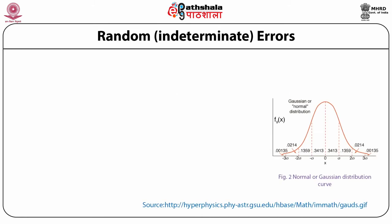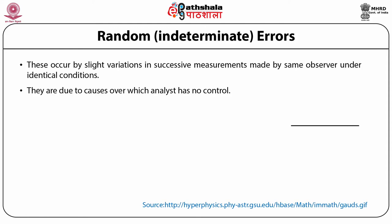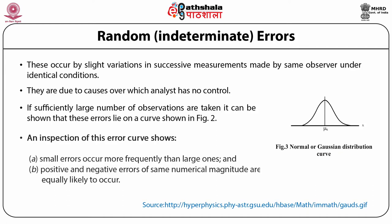Another type are random or indeterminate errors. These manifest themselves by slight variations in successive measurements made by the same observer with the greatest care under nearly identical conditions. They are due to causes over which the analyst has no control and are generally intangible. If a sufficiently large number of observations are taken, these errors follow a normal distribution curve. An inspection of this error curve shows that small errors occur more frequently than large ones, and positive and negative errors of the same numerical magnitude are equally likely to occur.